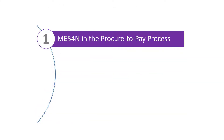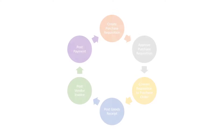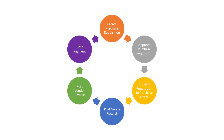Let's begin with where transaction ME54N fits in the Procure2Pay process. Transaction ME54N is used to release or approve a purchase requisition. In most organisations, it's necessary to obtain approval for spend. This approval can be provided offline, for example by signing a piece of paper, online by approving within the relevant financial software — in this case SAP — or a combination of the two.